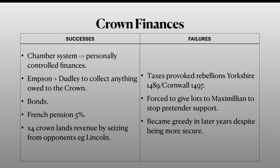Moving on to the failures of Henry VII's crown finances. The taxes he raised for war provoked rebellions in Yorkshire in 1489 and Cornwall in 1497, and the taxes were never really collected properly. He was forced to give a lot of money to Maximilian, the Holy Roman Emperor, to stop pretender support. During the last few years of his reign, he became quite greedy with his finances despite being much more secure than at the start of his reign.